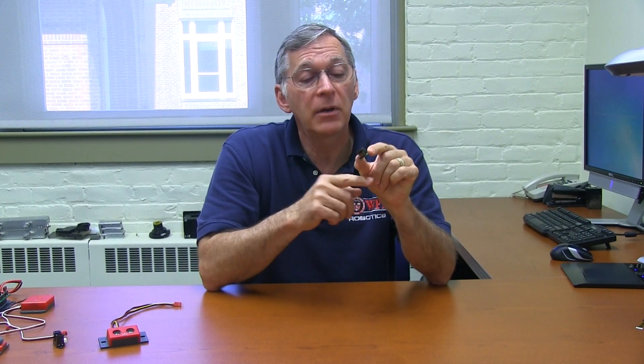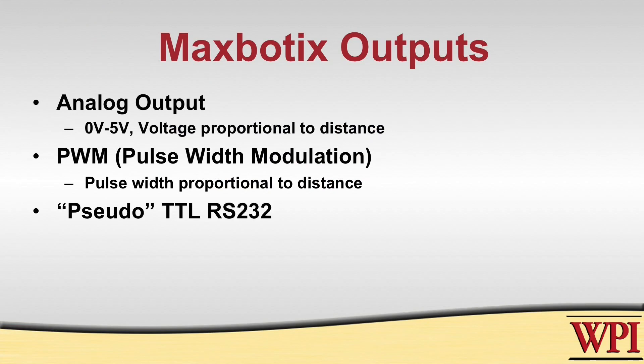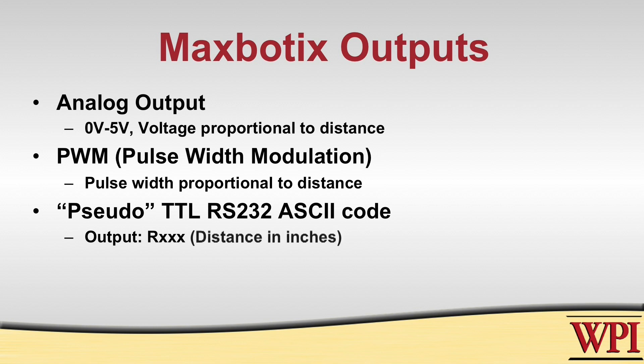The final way that it does output is that it can send out a pseudo TTL RS232 ASCII code. So it generates, for example, the digits R, XXX, where R stands for range. The XXX is the distance to the object in inches, and it just keeps sending that out over a TTL serial line. So three different ways of interfacing to a MaxBotix sensor.